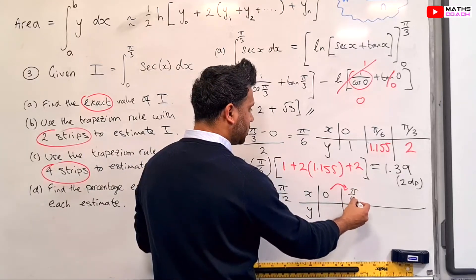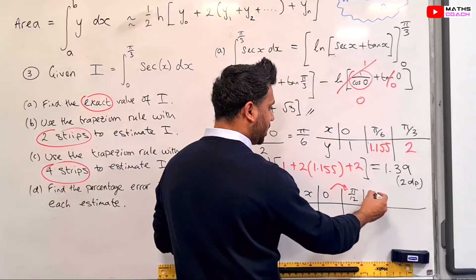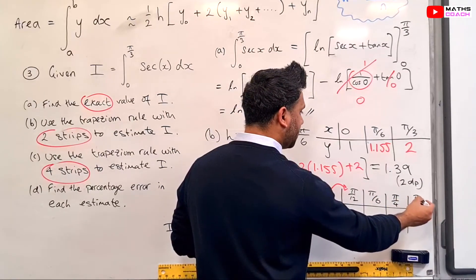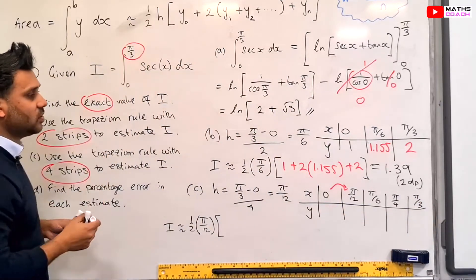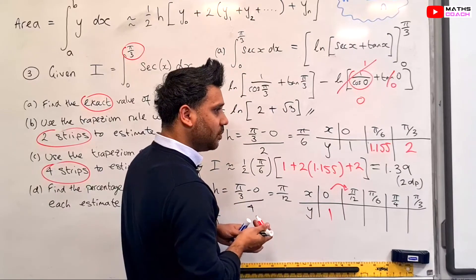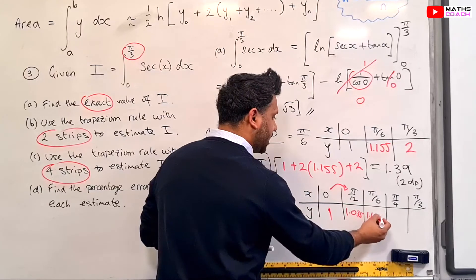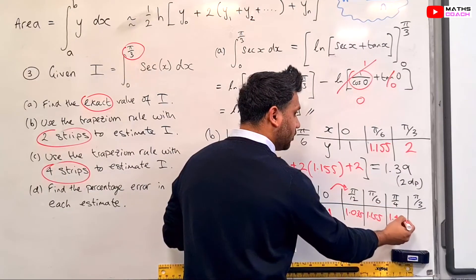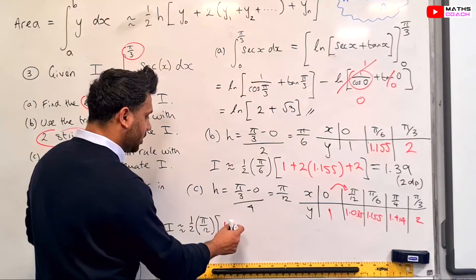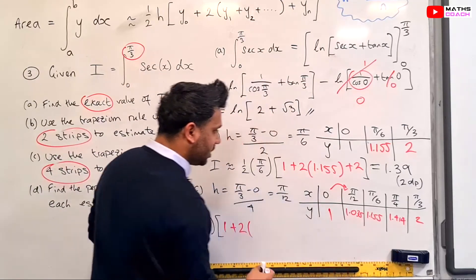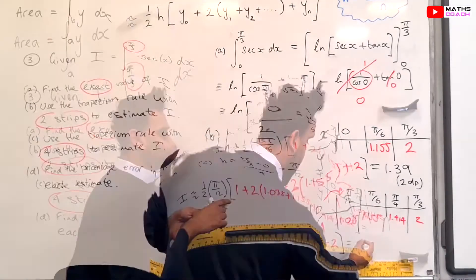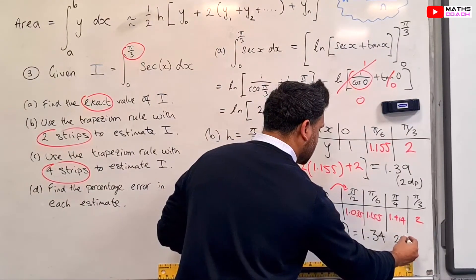So our x values are 0, pi by 12, pi by 6, pi by 4, and pi by 3, where we stop at the top limit. Working out the corresponding y values by substituting each x into sec x, we get 1, 1.035, 1.155, 1.414, and 2. Going back to the trapezium formula: a half times pi by 12 times (1 + 2×(1.035 + 1.155 + 1.414) + 2), and that equals 1.34 to two decimal places.